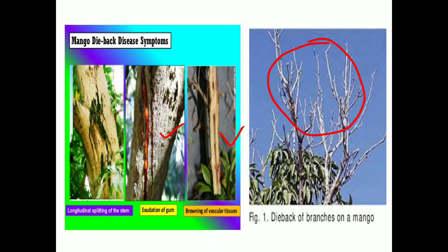Regarding perpetuation — perpetuation means the survival of the pathogen in different hosts under unfavorable conditions. The pathogen survives in the soil, on the seed, or in any part of the plant when unfavorable conditions arise. For dieback, perpetuation occurs through infected twigs containing the fruiting bodies of the fungus.